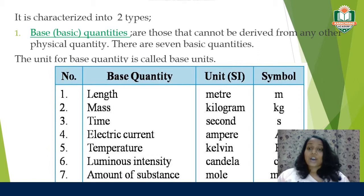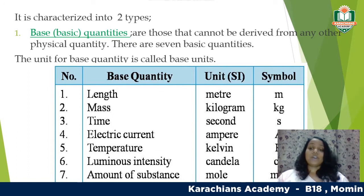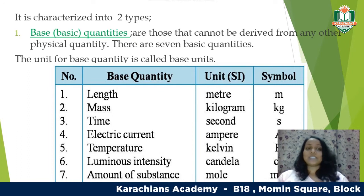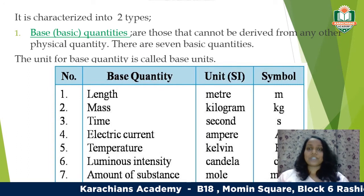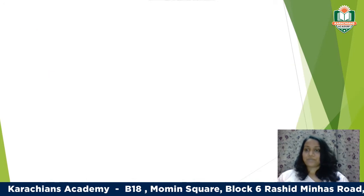In our physics syllabus, we will mainly focus on the first five base quantities. The other two — luminous intensity and amount of substance — are not discussed in detail as they are not part of the syllabus.